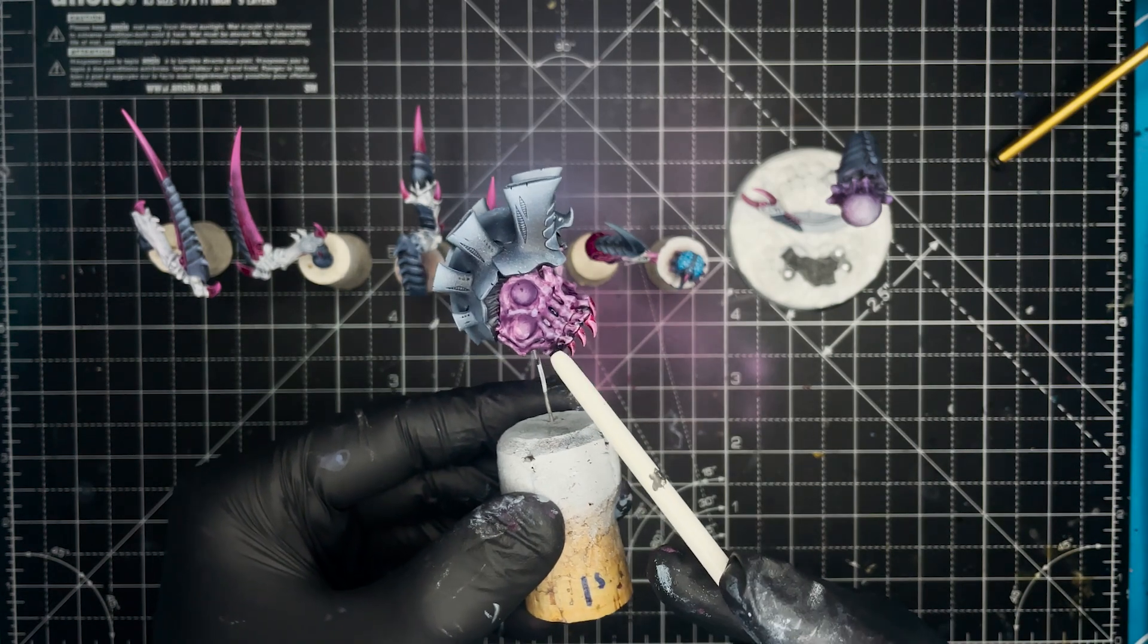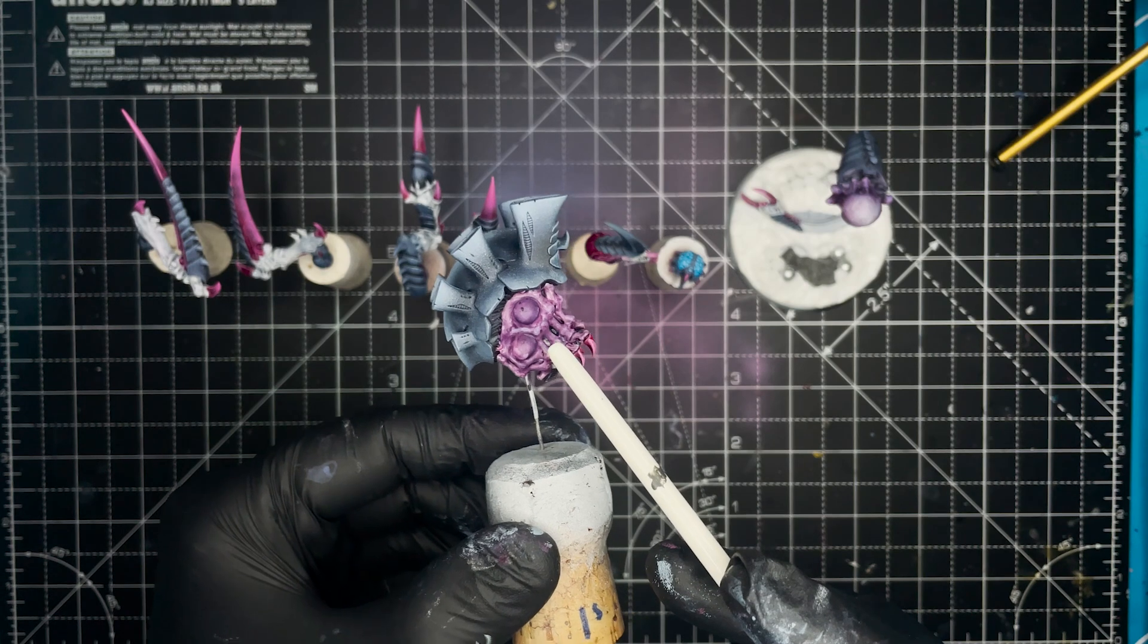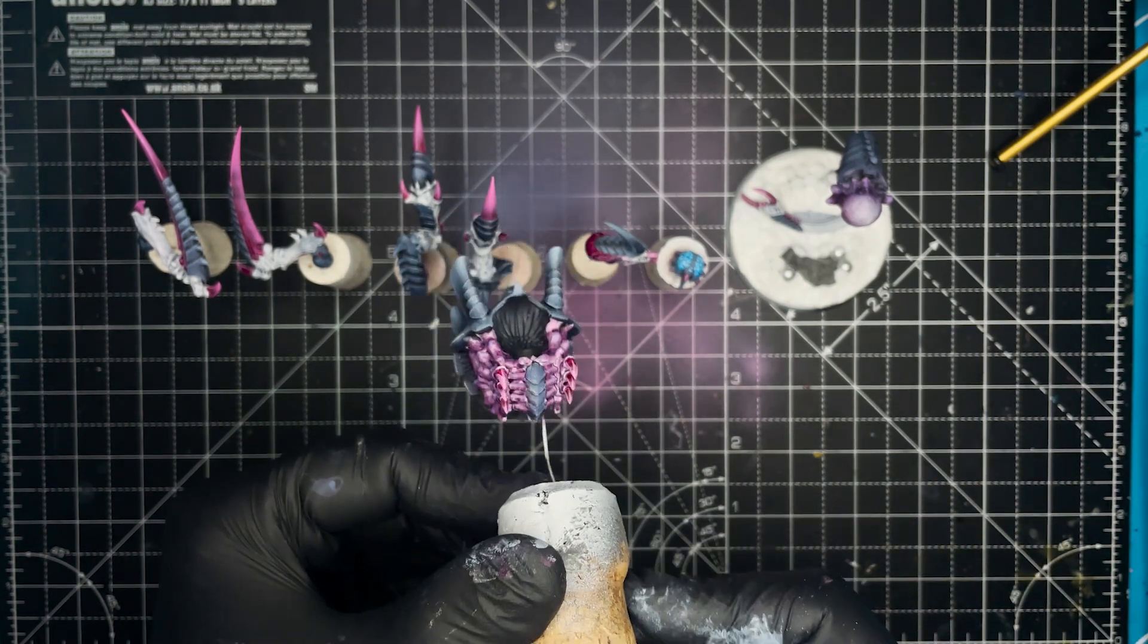I then painted all of the boned areas on the model and I used Citadel Contrast Magos Purple and I used two coats of that.